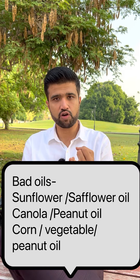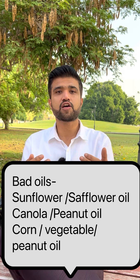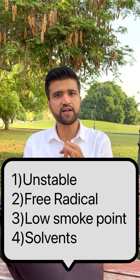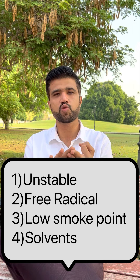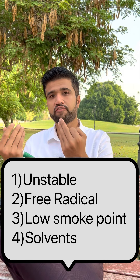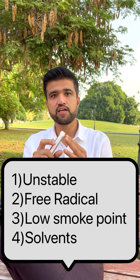I will give you a few examples of bad oils: sunflower oil, safflower oil, vegetable oil, corn oil, canola, and peanut oil, among many others. Why are they bad oils? Because they are unstable — when you cook, they will not remain in stable form. They generate free radicals which will damage your tissues. After a certain temperature they convert into very unstable, harmful products. They also require a chemical solvent called hexane which is very damaging to your body. So these are bad oils, which are unstable oils.